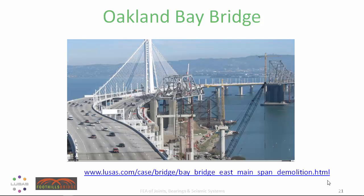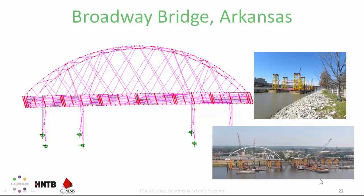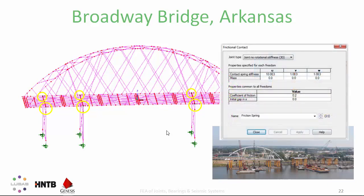For the new Broadway Bridge in Little Rock, Arkansas, designed by HNTB, the two 440-foot steel basket handle arches were constructed on top of false work on barges and floated into position. When the barges are flooded and the bridges brought to rest on permanent end bearings, the deck tends to elongate and depending on friction in the temporary bearings, this can set up design-critical load effects in the temporary towers. Genesis Structures used frictional contact joints between deck and towers, leading to a less conservative, cheaper, but safe design.